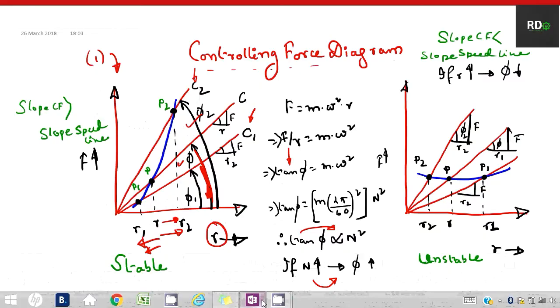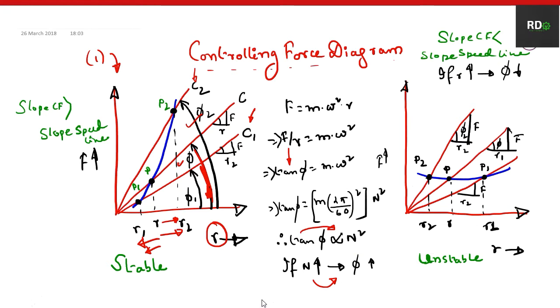This is a controlling force diagram. From the centrifugal force equation F = mω²r, where ω is the angular speed, r is the radius of rotation, and m is the mass of the governor balls — transferring r to the left-hand side gives us tan φ. Taking m as constant, tan φ is directly proportional to n², meaning if n increases, φ should also increase.